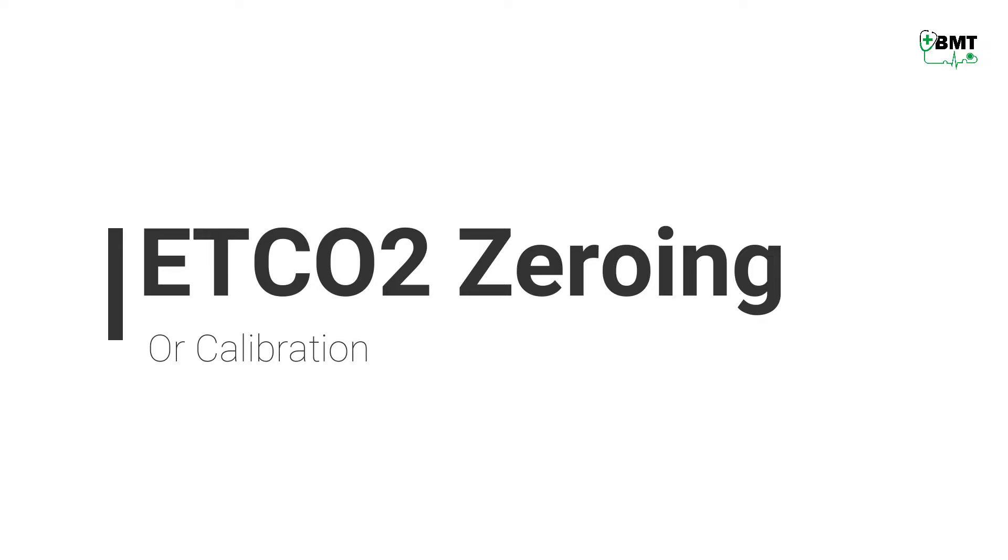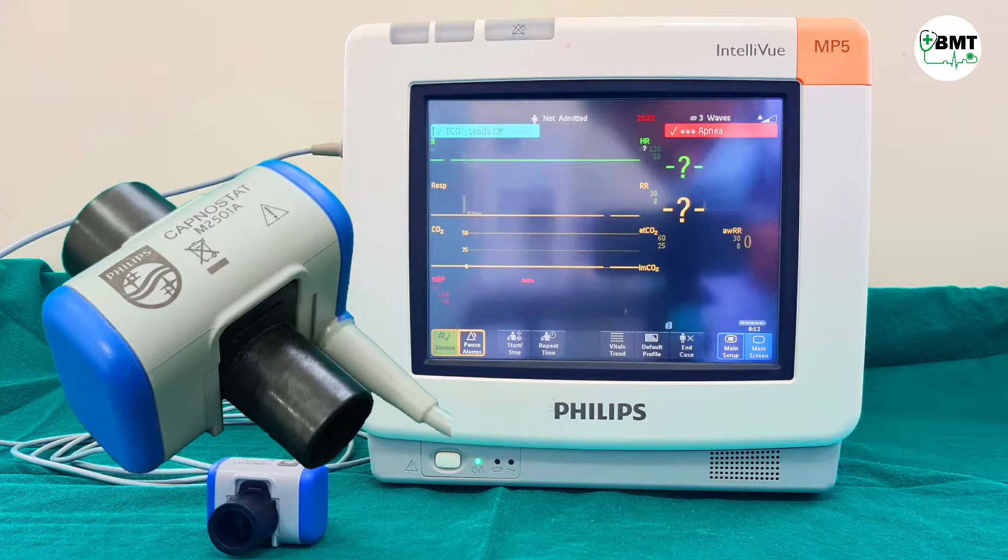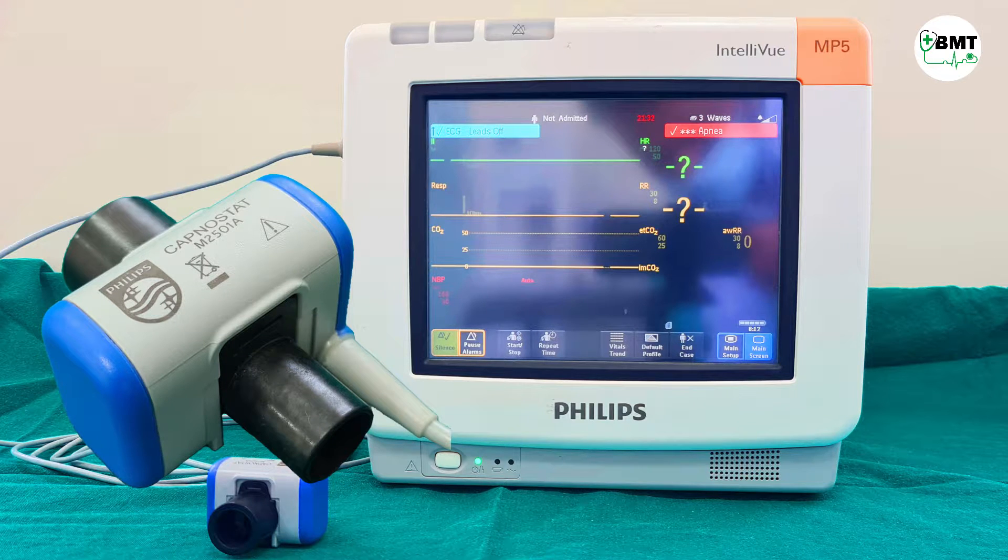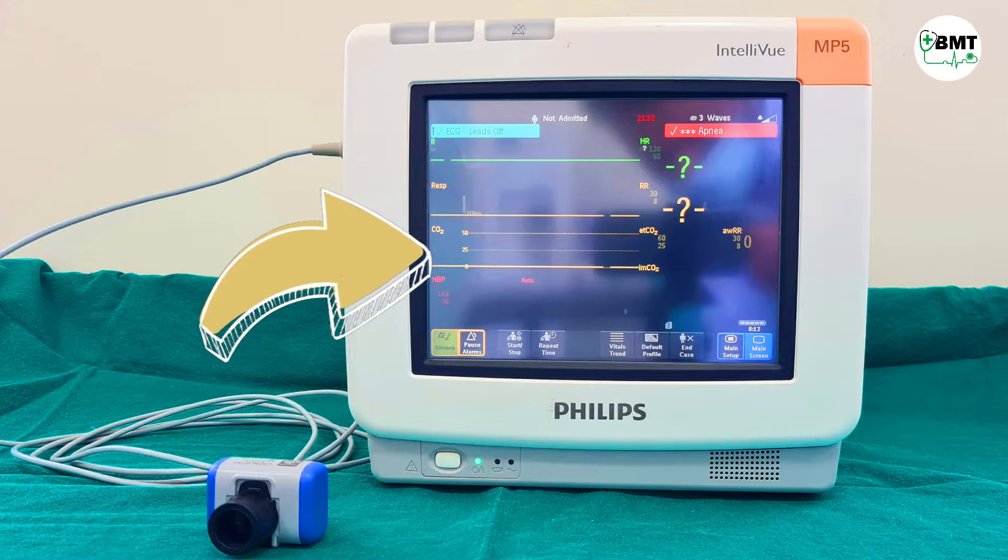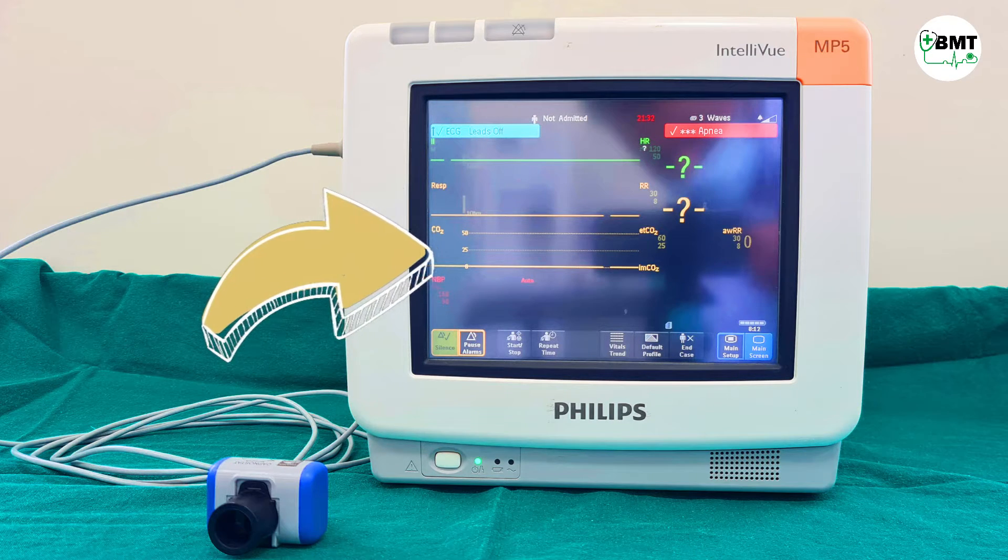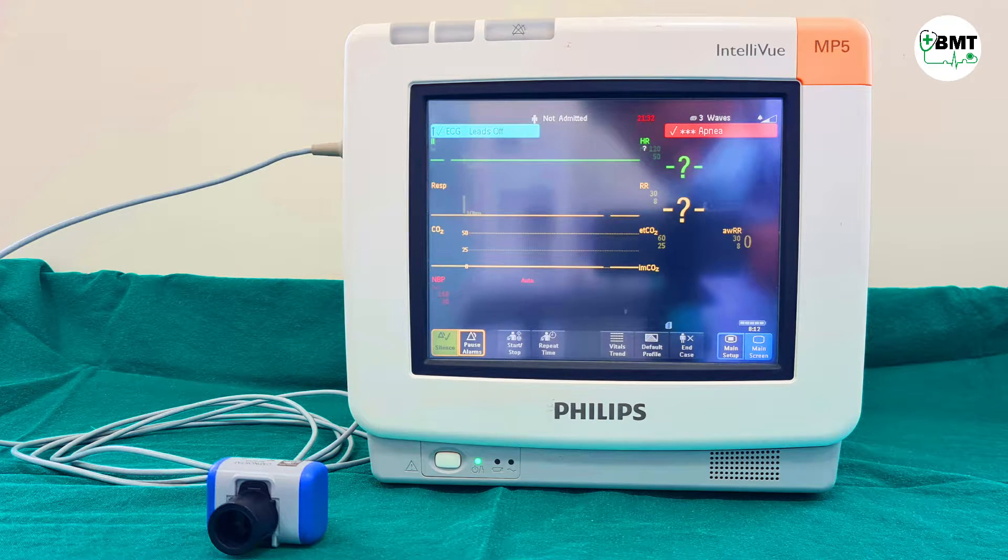In the same way, in ETCO2 zeroing, we keep ETCO2 sensor open in air and start calibration to eliminate CO2 present around the sensor and bringing it to the baseline. And after that, the reading which comes are actual or absolute reading with respect to the baseline.